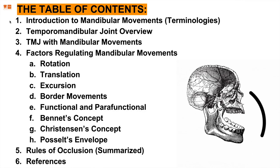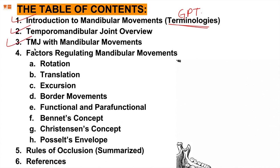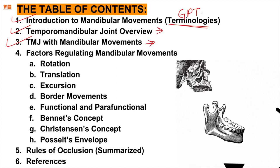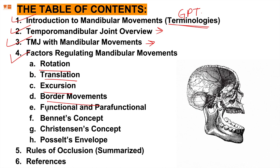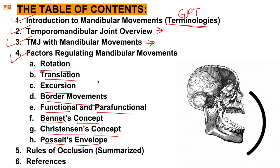Today's lecture consists of an introduction to mandibular movements. We begin our prosthodontic lectures with terminologies — the glossary of prosthodontic terminologies is extremely important. Moving on to temporomandibular joint overviews, then TMJ mandibular movements — static and dynamic. Then we'll look at factors regulating mandibular movements: rotation, translation, excursion, border movements, functional and parafunctional habits and their movements, as well as Bennett concepts, Christensen's concept, and Posselt's envelope, which summarizes all the above points.